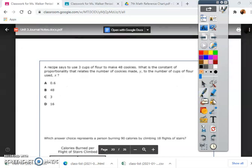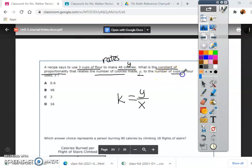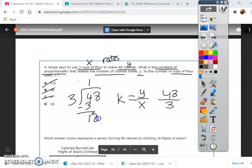This one should not. A recipe says to use 3 cups of flour to make 48 cookies. What is the constant of proportionality? Constant of proportionality, k, y over x. That is on our formula chart. That relates the number of cookies made, y, 3 cups of flour to make 48 cookies. Number of cookies is y. To the number of cups of flour, x. So, y is 48. It says it. Cookies, y. Cups of flour, x. Over 3. X, which is 3. So, I just divide. 48 divided by 3. Only one answer will work. 3 into 18, 6. So, it's 16.